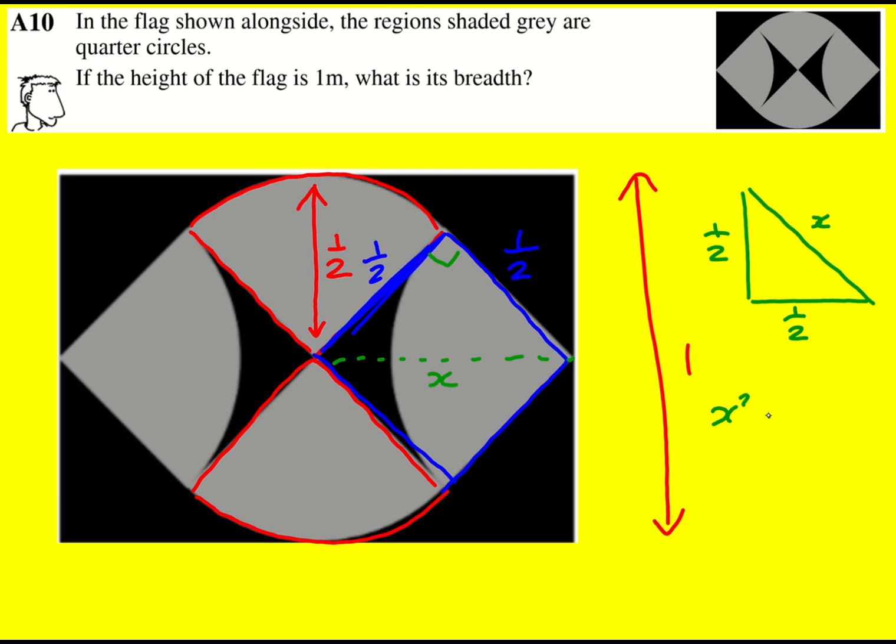So x squared is going to be a half squared plus a half squared, which is a quarter plus a quarter, which is a half. And therefore x is going to be the square root of one over two or one over root two.